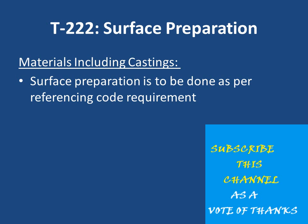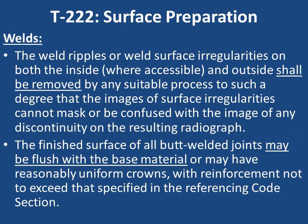T-2212: Surface Preparation. For materials including castings, surface preparation as per the referencing code requirement is to be done. For welds, weld ripples or surface irregularities on both the inside (where accessible) and outside shall be removed by any suitable process to such a degree that the images of surface irregularities cannot mask or be confused with the image of any discontinuity on the resulting radiograph. The finished surface of butt welded joints may be flush with the base material or may have reasonably uniform crowns with reinforcement not exceeding that specified in the referencing code section.